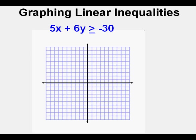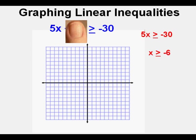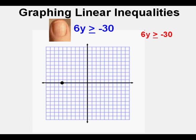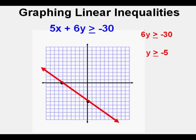Let's look at this inequality: 5x plus 6y is greater than or equal to negative 30. We use our thumb to cover the y term, leaving us with 5x is greater than or equal to negative 30. We solve for x by dividing both sides by 5 to get x is greater than or equal to negative 6. We mark the x-intercept on the x-axis at negative 6. Next, we cover the x term, leaving 6y is greater than or equal to negative 30. Dividing both sides by 6, y is greater than or equal to negative 5. We mark the y-axis at negative 5. Using both intercepts, we draw the line — a solid line, since the symbol is greater than or equal to.